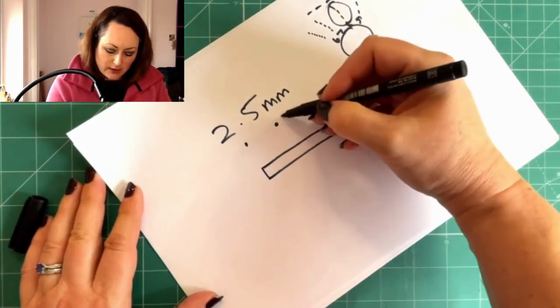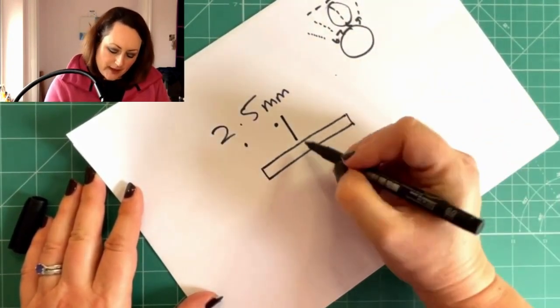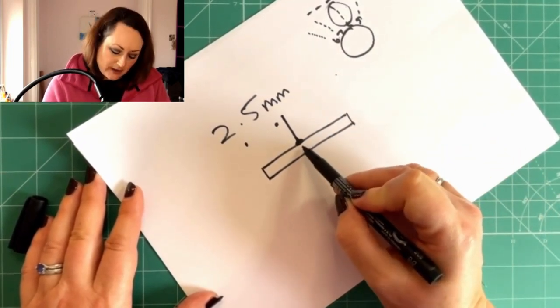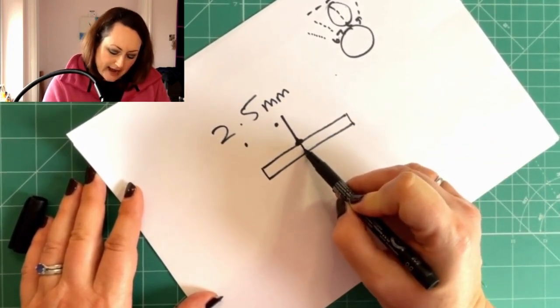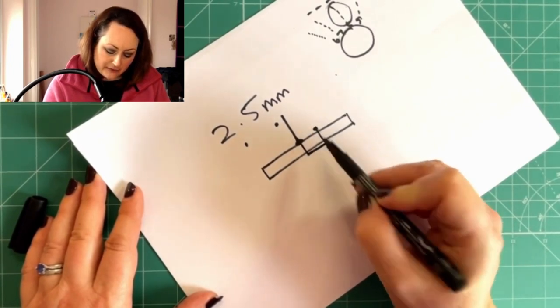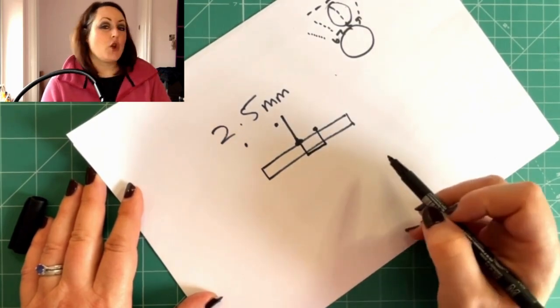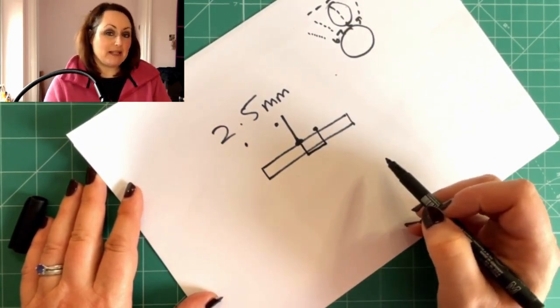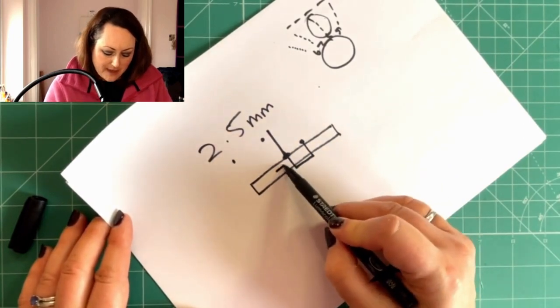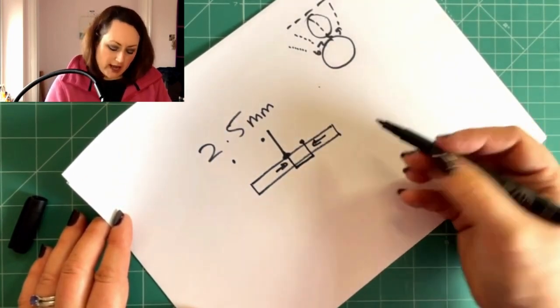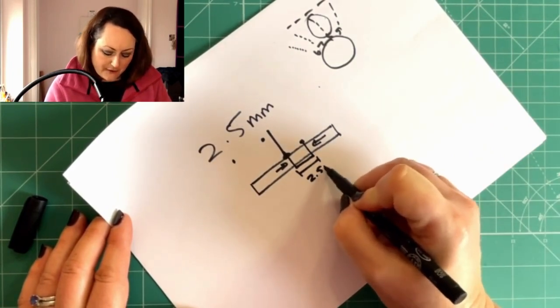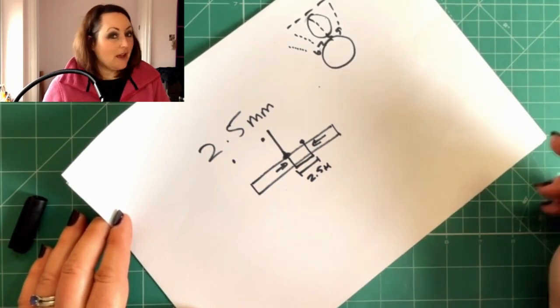So your needle, your sewing machine needle comes in here, and it enters the fabric here and then that's where your measurement starts. So your stitch has to go down, it has to go along and it has to go up and leave and the length of that is 2.5 millimeters. So if you're measuring it, this bit here and this bit here are so tiny that this will measure your 2.5 millimeters. You with me on that one?